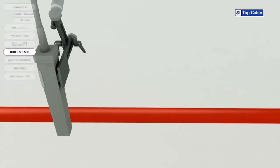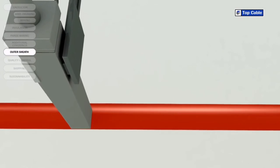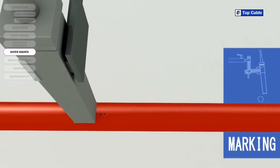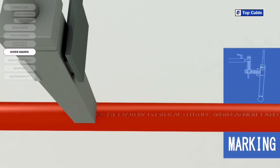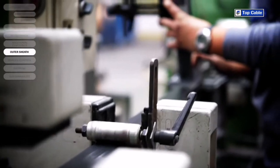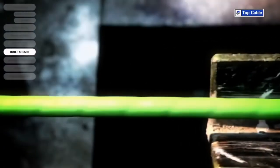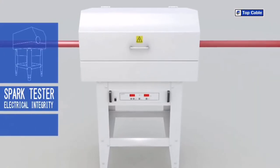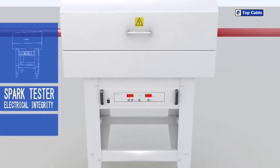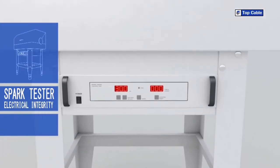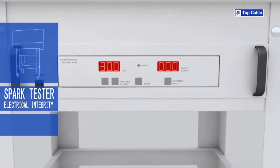So that all Top Cable customers can correctly identify their cables, the cables are marked with the most important information: manufacturer, trade name, cable name, number of conductors, cross-section, construction regulation and standards, CE marking, and other information of interest such as the product's certification. There is also a meter-by-meter mark on the cable to help customers with their stock control.